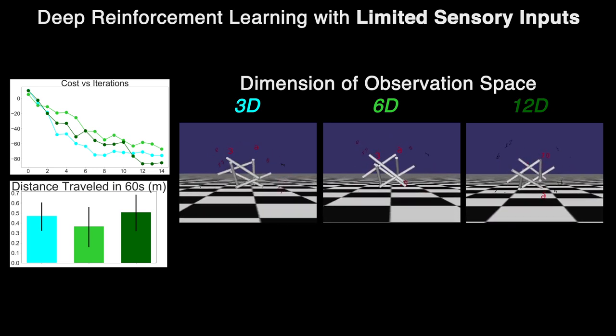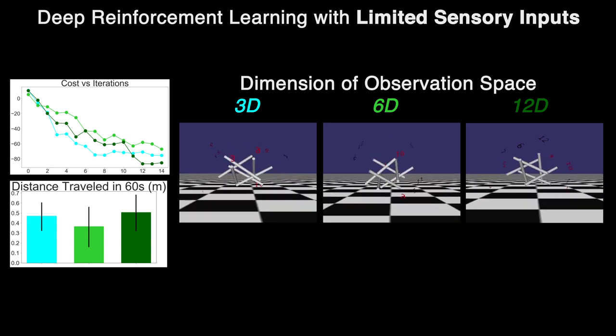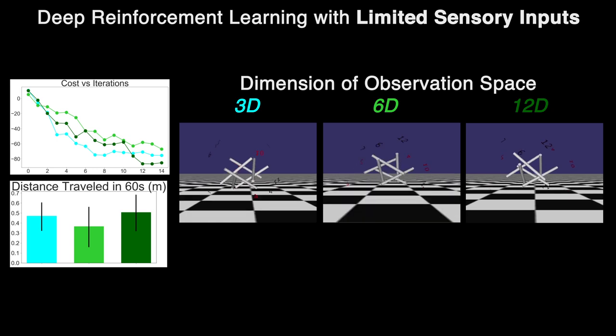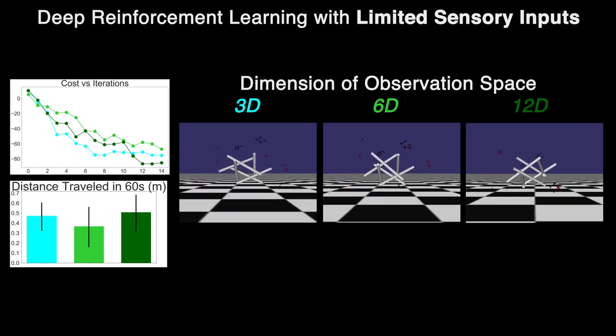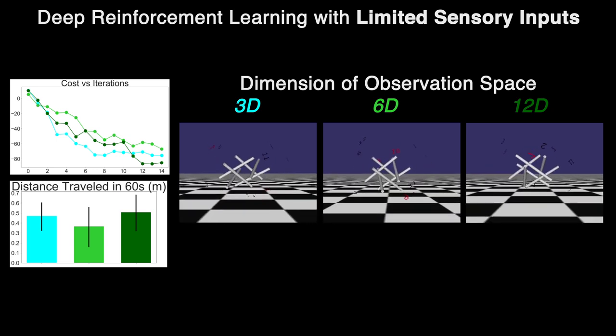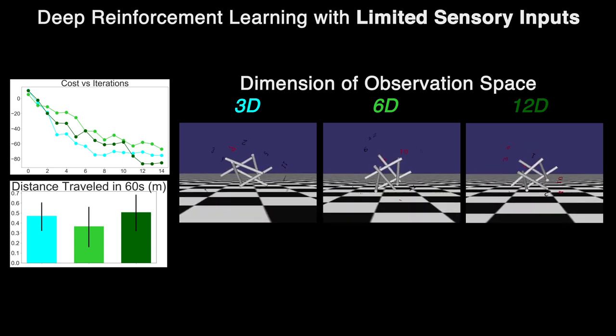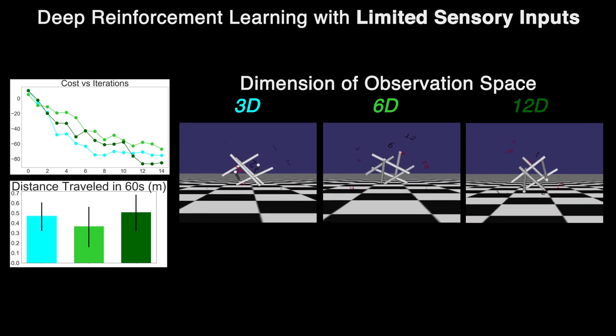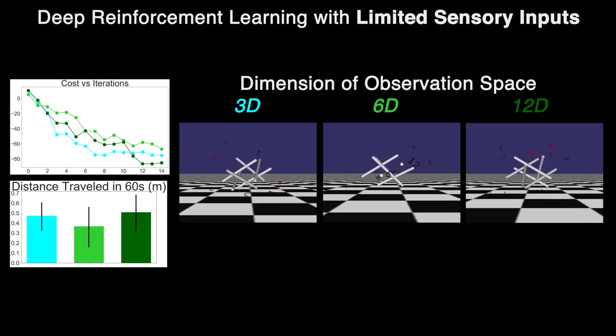Although the spherical tensegrity system is dynamically complex, we found that the policies trained with lower-dimensional data still performed as well as the original.